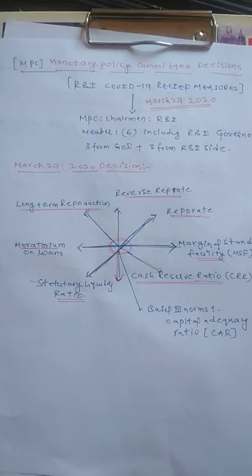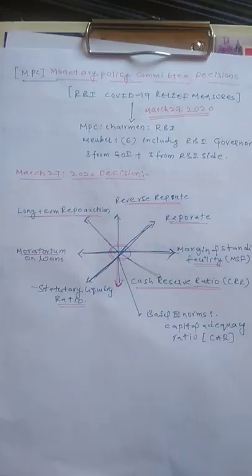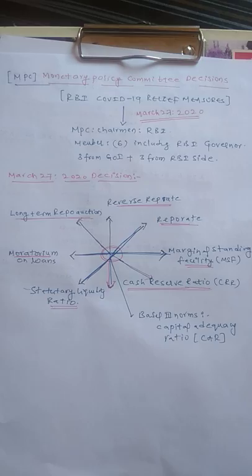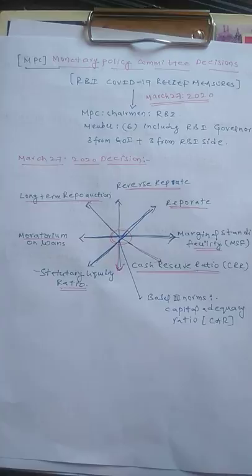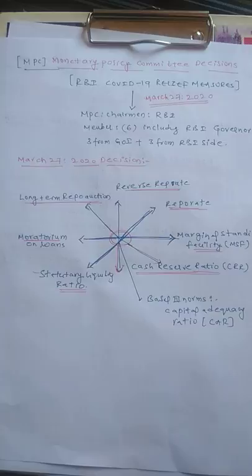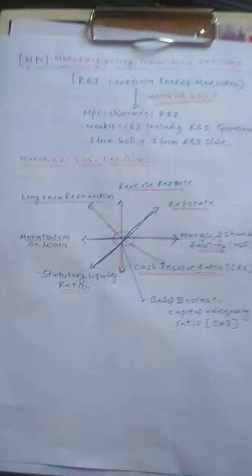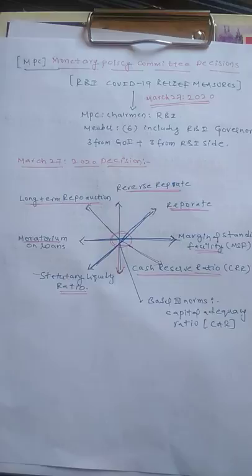The Monetary Policy Committee consists of six members: three from the Government of India and three from RBI side. The RBI Governor is the chairman. This committee meets every two months for bimonthly monetary policy review. The committee headed by the RBI Governor took many decisions to revive the Indian economy on March 27th, 2020.